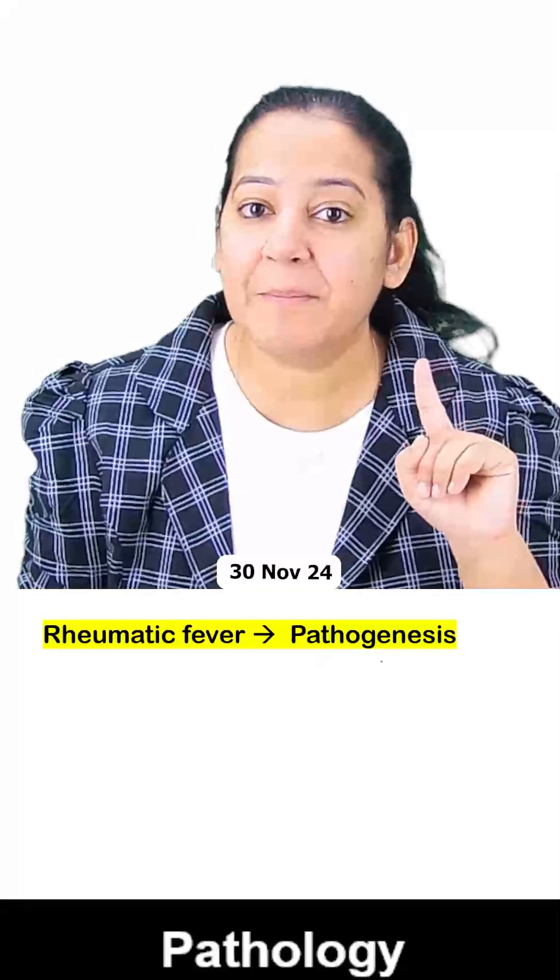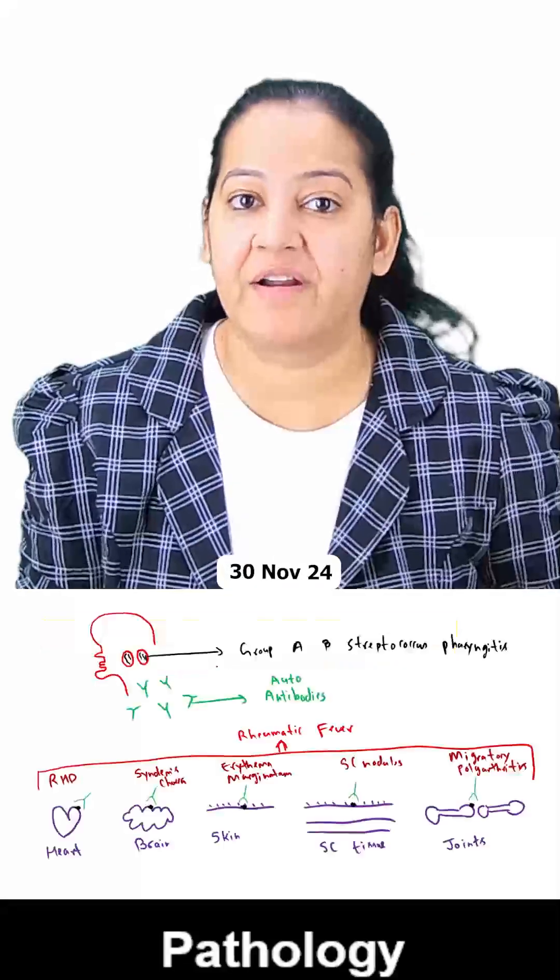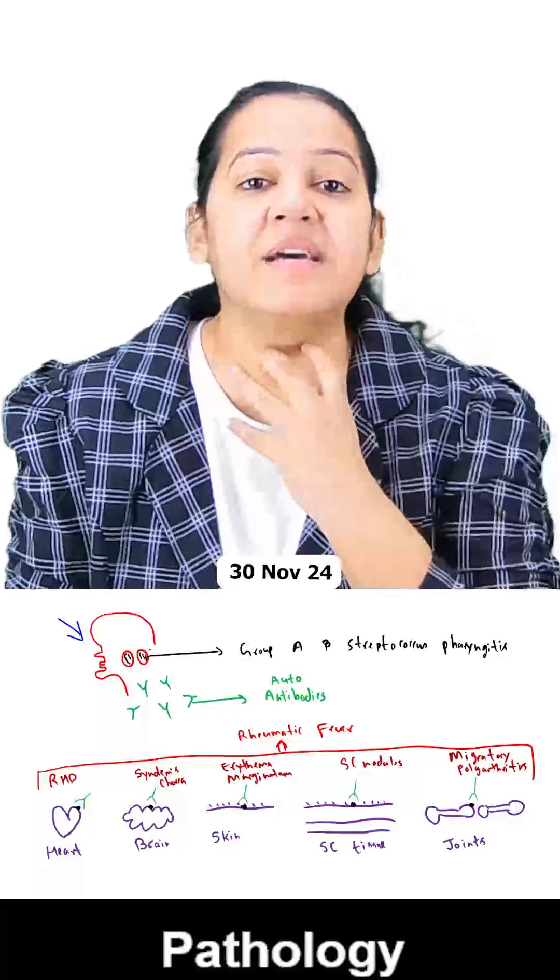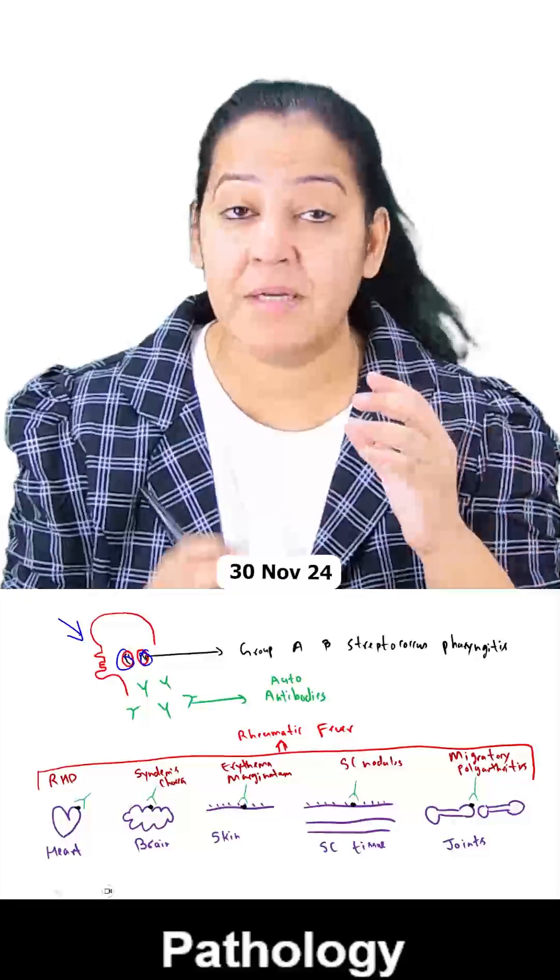Hello everyone, here I am telling you the pathogenesis of rheumatic fever. Rheumatic fever is usually a disease of children. You can see this is a person - these are the tonsils of the person. The person got tonsillitis or pharyngitis by a bacteria, the name of the bacteria is Group A Streptococcus.